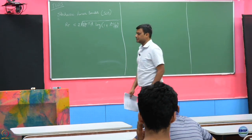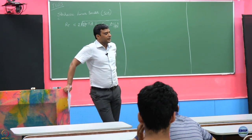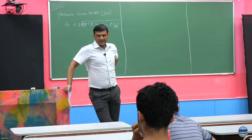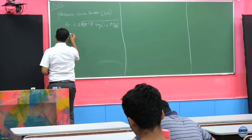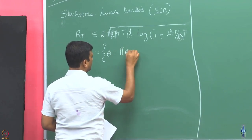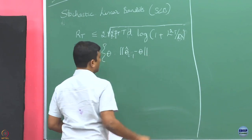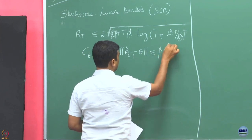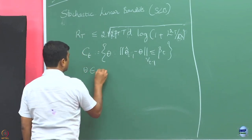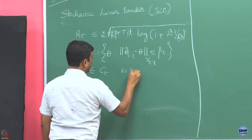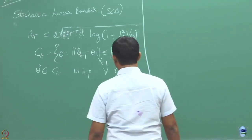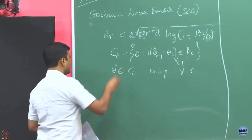Today what we will do is try to understand if it is possible to come up with a confidence set which satisfies our assumption. Our assumption was that there exists some set C_t defined as theta such that the norm of theta_hat minus theta with respect to V_t is bounded by beta_t, such that theta star belongs to that set with high probability for all t. Henceforth we will call it a confidence ellipsoid.